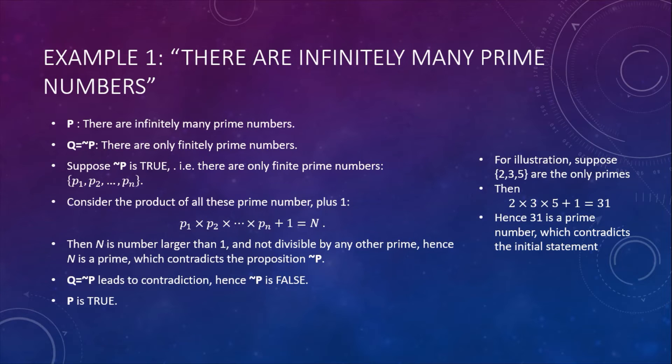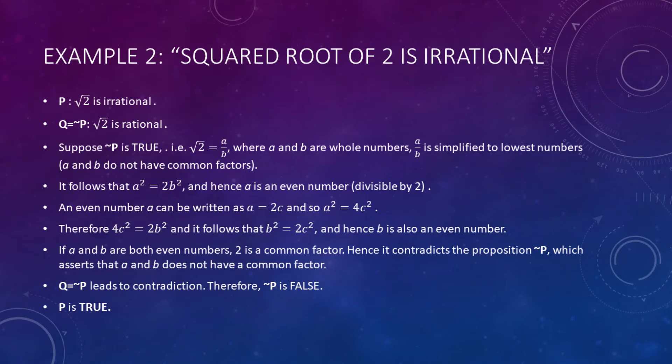Proposition not-P leads to contradiction, hence we should take the proposition as false. So we must accept that proposition P is true. Another example is the square root of 2 is irrational—that's proposition P. We prove this by supposing that √2 is rational, that's proposition not-P.